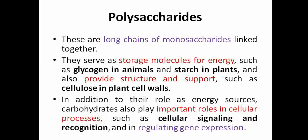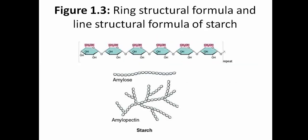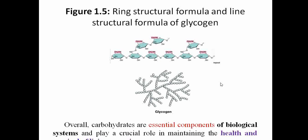In addition to their role as energy sources, carbohydrates also have important roles in cellular processes such as cellular signaling — from cell to adjacent cell — which is needed for muscle contraction, muscle relaxation, and signals from the brain. They are also involved in cell recognition and regulating gene expression. Starch, cellulose, and glycogen structural and line-structural formulas illustrate these molecules. Overall, carbohydrates are essential components for biological systems.